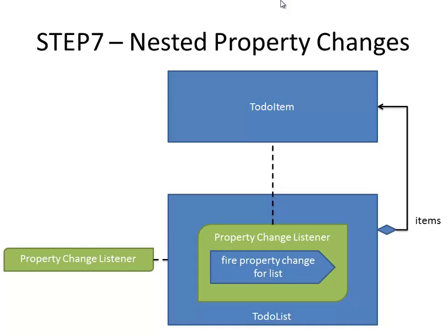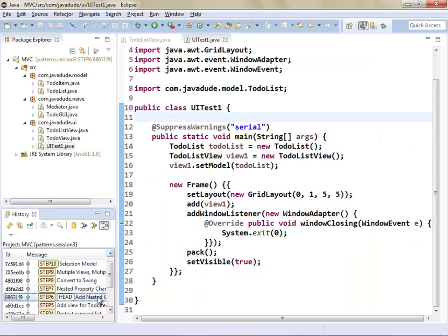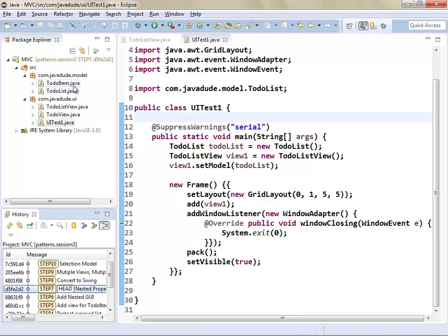Now we're going to do some nested property changes. In my ToDoList, any time I have a ToDoItem added, I'm going to listen to it. Any time there's a change to that item, I'm going to treat it as though my 'items' property has changed and fire that property change listener. This sets it up so that anybody listening to that to-do list will know that either the list of items has changed or the contents of any of those items has changed. This is something you may or may not want to do depending on your design.